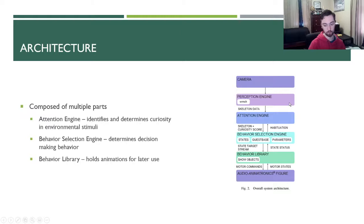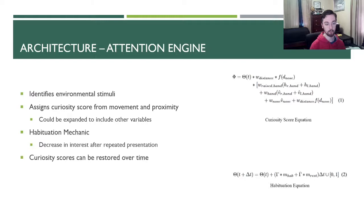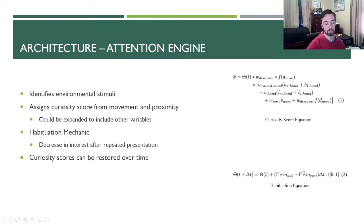The programming architecture is composed of multiple parts: the attention engine, the behavior selection engine, and the behavior library. The attention engine identifies environmental stimuli based on computer vision and assigns a curiosity score to each person the computer vision notices. It tracks the face and hands of everybody in the frame. There's a habituation mechanic where if somebody has been in the frame too long and has already been acknowledged, they won't be noticed as much — however, over time curiosity scores can be restored to higher values by the habituation equation's second term.